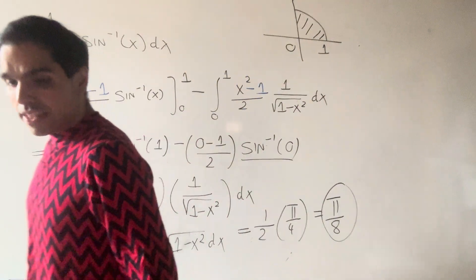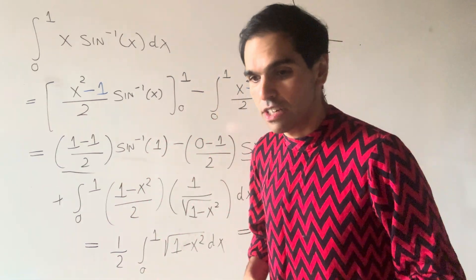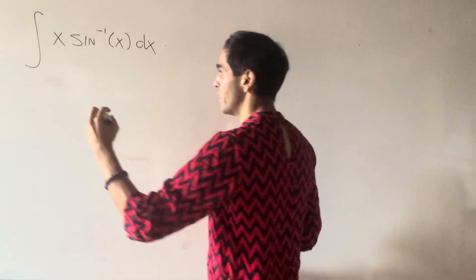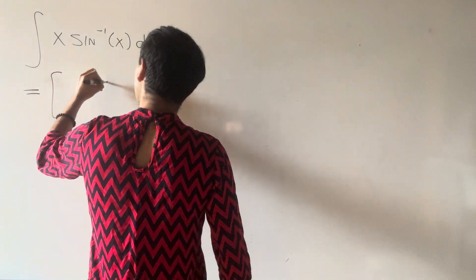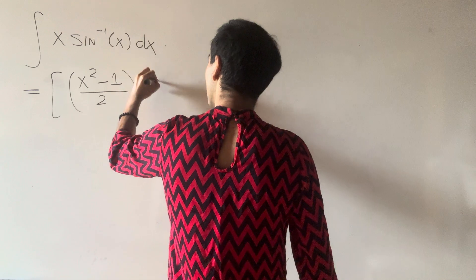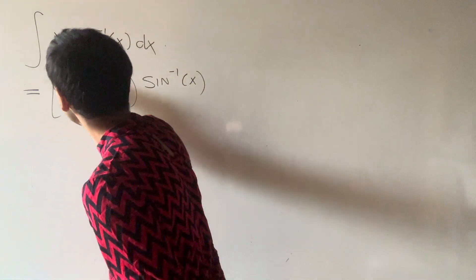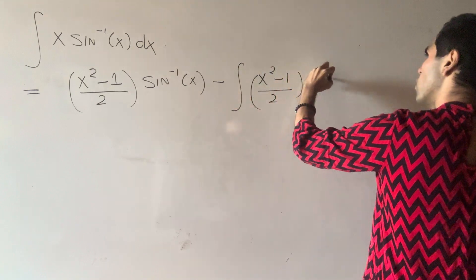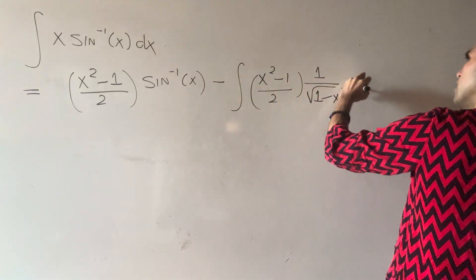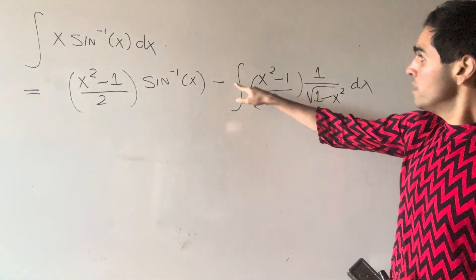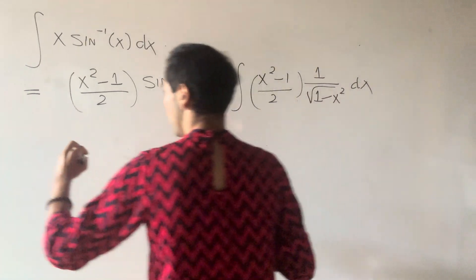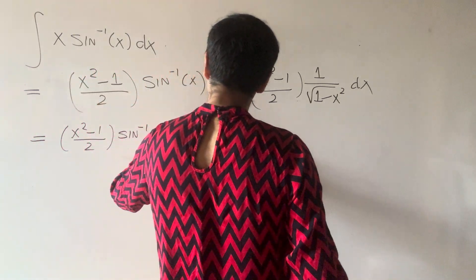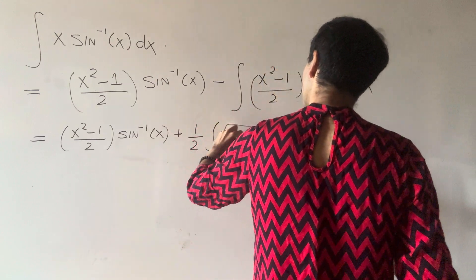That's it. The cool thing is we can generalize this integral — there's nothing special about zero and one. Let's evaluate the general antiderivative using the same trick. We know to choose the antiderivative x squared minus one over two times arcsin(x), and then minus the integral of x squared minus one over two times one over the square root of one minus x squared. So we end up getting x squared minus one over two times arcsin(x), plus one half times the integral of the square root of one minus x squared dx.